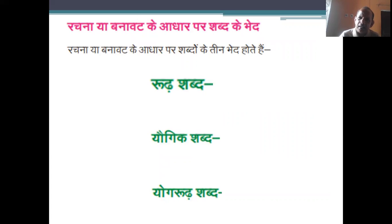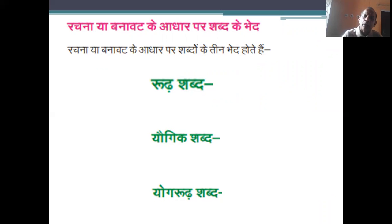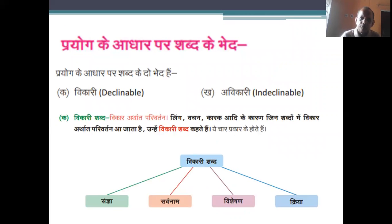रचना या बनावट के आधार पर शब्दों के तीन भेद होते हैं — पहला है रूढ़ शब्द, दूसरा है योगिक शब्द, और तीसरा है योगरूढ़ शब्द। प्रयोग के आधार पर शब्दों के दो भेद होते हैं — विकारी और अविकारी। विकारी शब्दों में विकार अर्थात परिवर्तन होता है।